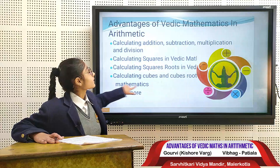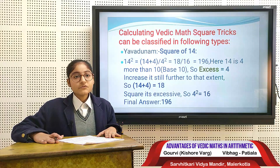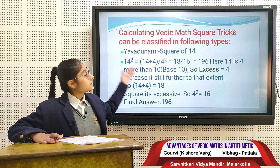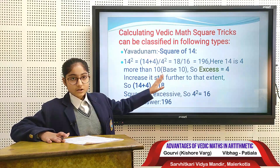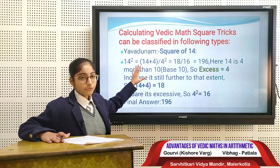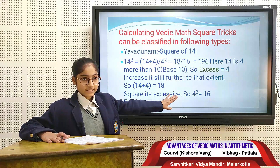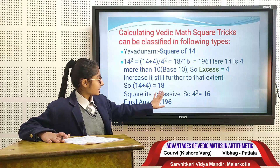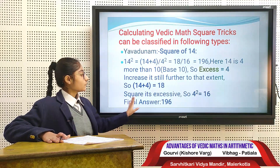Here I am giving you an example of squaring in Vedic maths. There are three methods. The first method is Yavadunam. We take the example of the square of 14. 10 is the base of 14, and 14 is 4 more than 10. Then we add 4 to 14 to get 18, and take the square of 4 which is 16. Our final answer is 196.